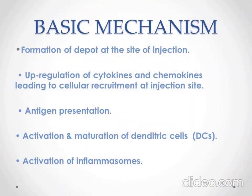Adjuvants generally follow specific steps while functioning. The first step is the formation of a depot at the site of injection. Second, up-regulation of cytokines and chemokines leading to cellular recruitment at the injection site. Third, antigen presentation. Fourth, activation and maturation of dendritic cells. And lastly, activation of inflammasomes.